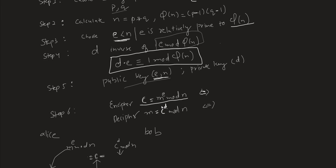Once we have all the keys ready, we can do encryption and decryption. Encryption is represented by the equation where c, the ciphertext, equals m raised to the power e mod n, where e and n come from the public key and m is the plaintext. On the receiving side, we decrypt to obtain the plaintext again.